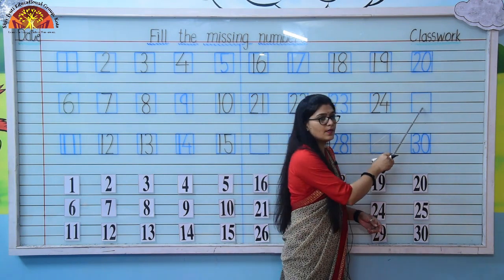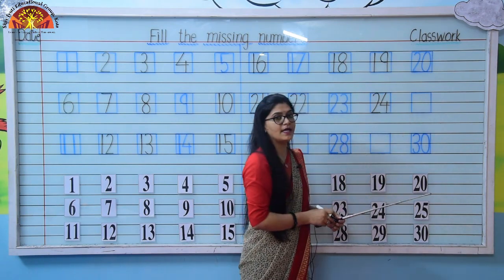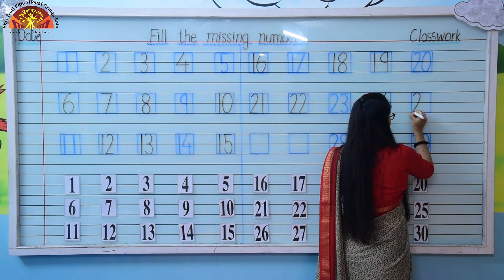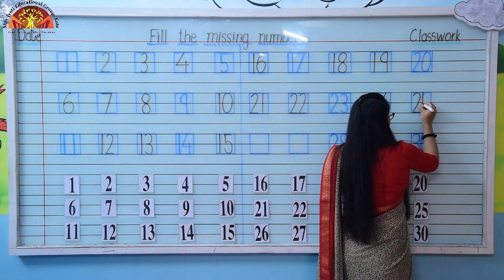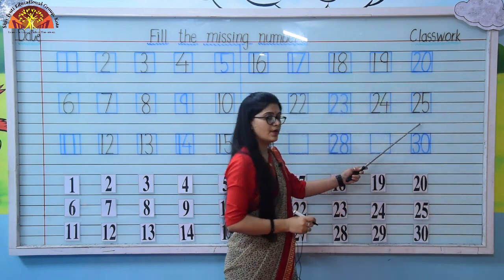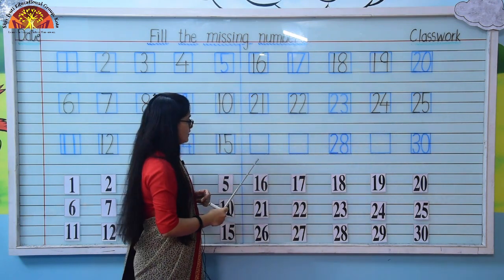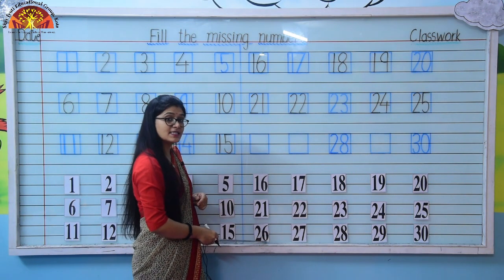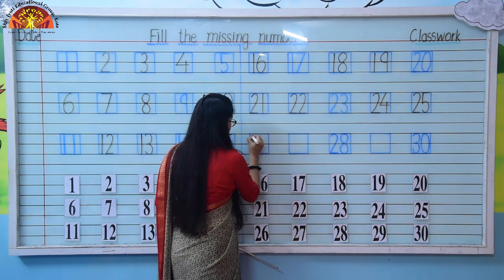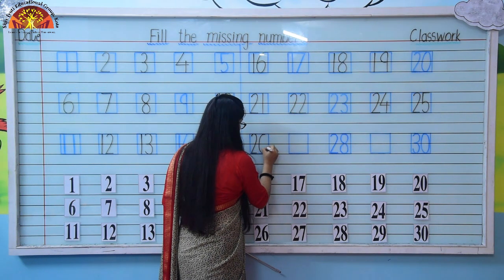Next, again one number is missing here. So which number comes after 24? It's 25. So here we will write number 25: 2, 5, 25. Again, one number is missing. So which number comes after 25? It's 26. So in this box we will write number 26: 26.